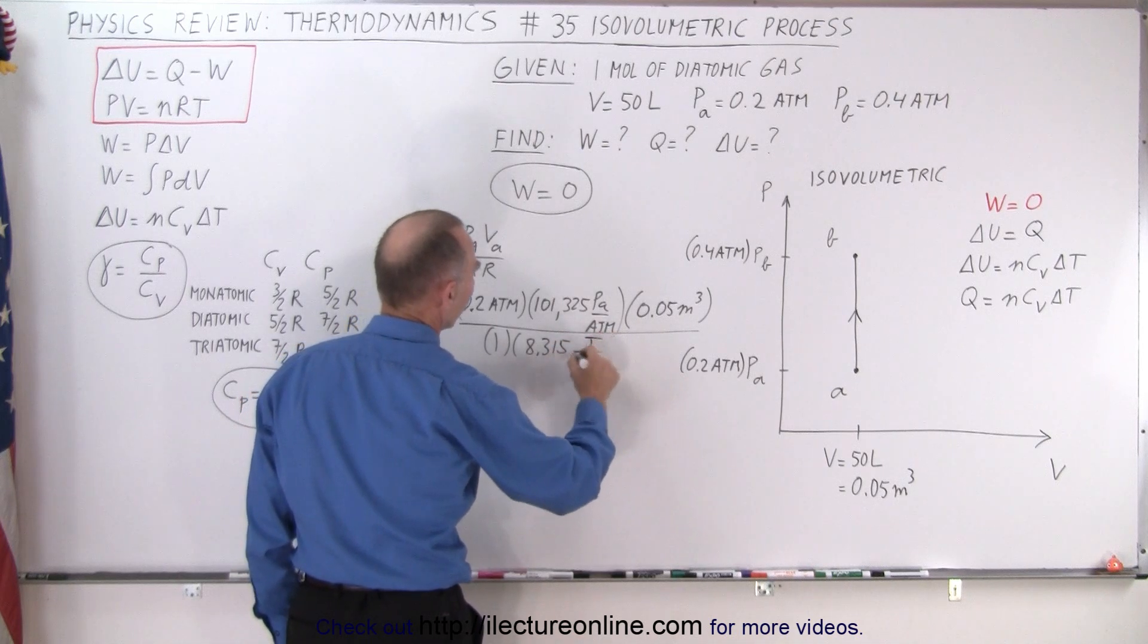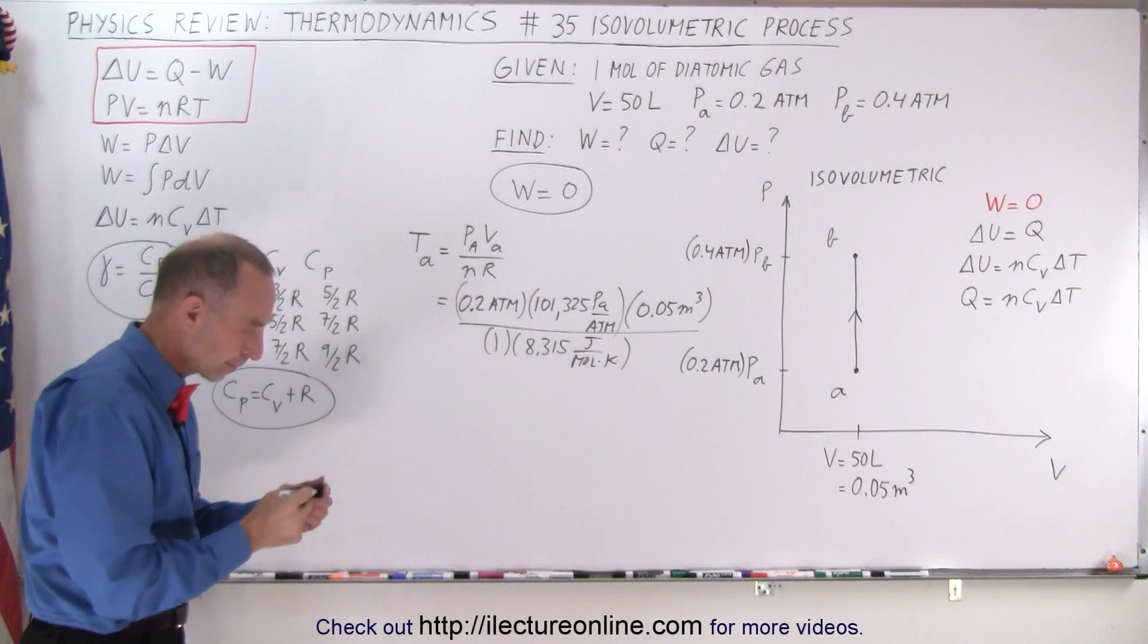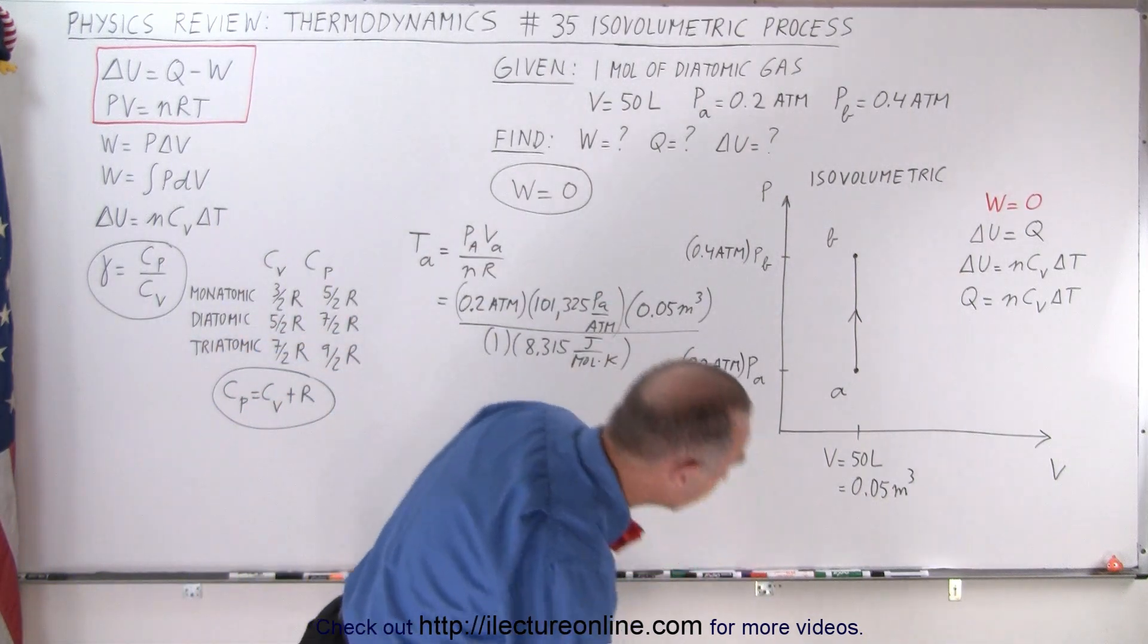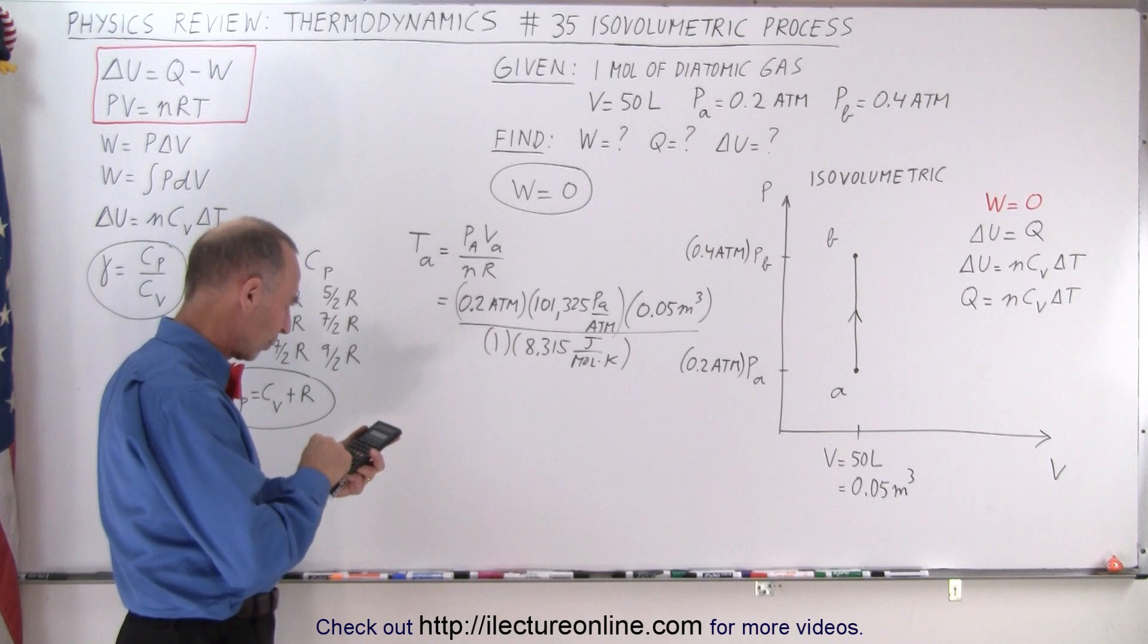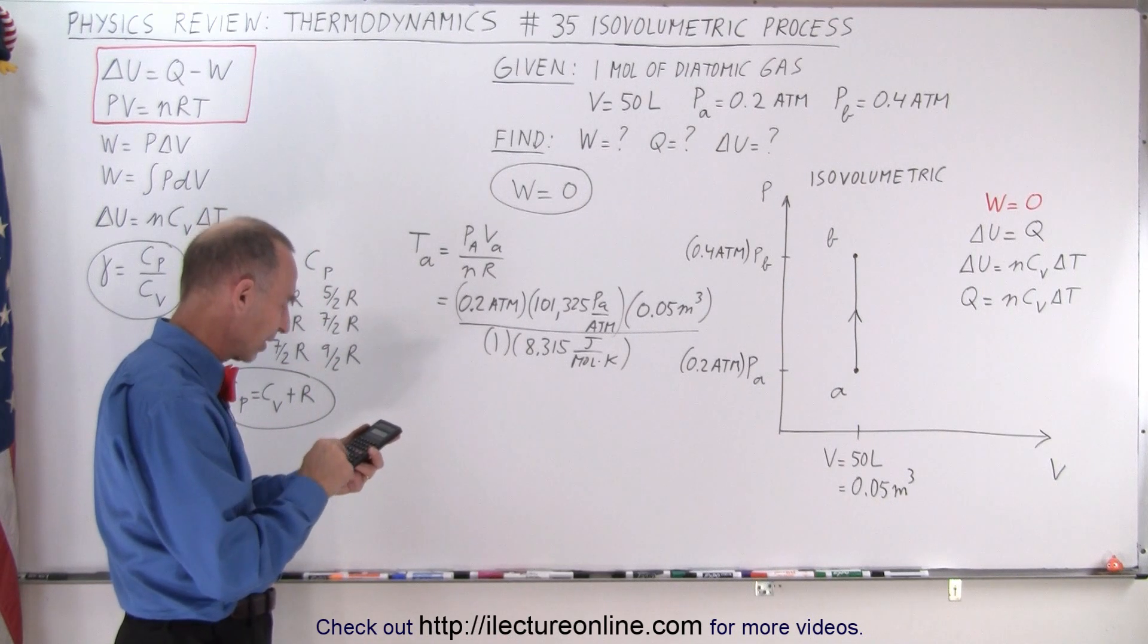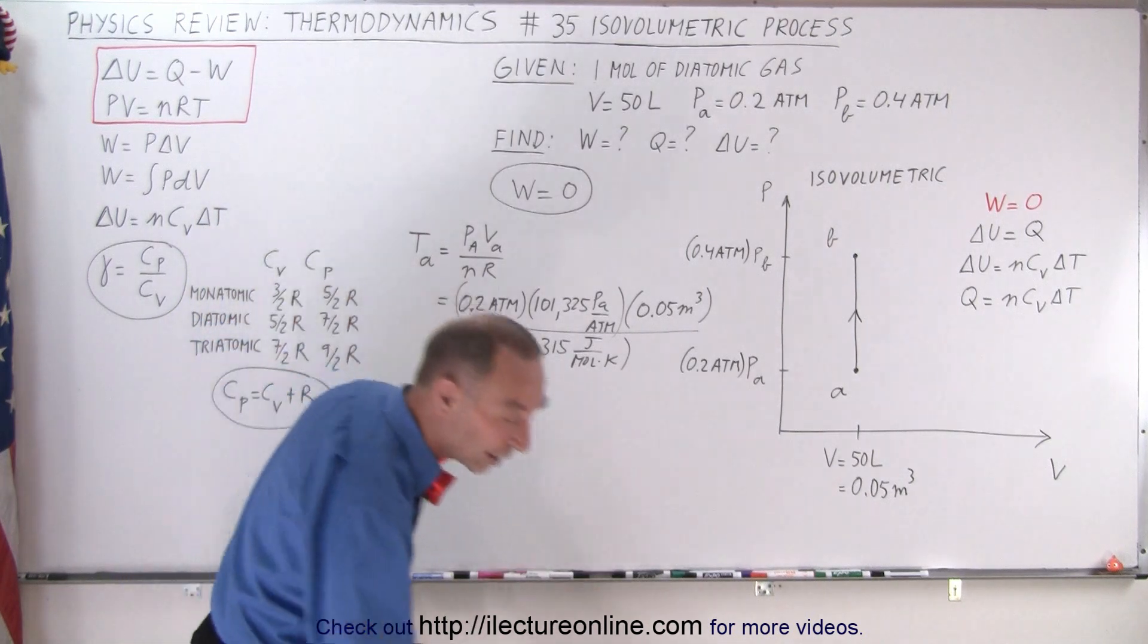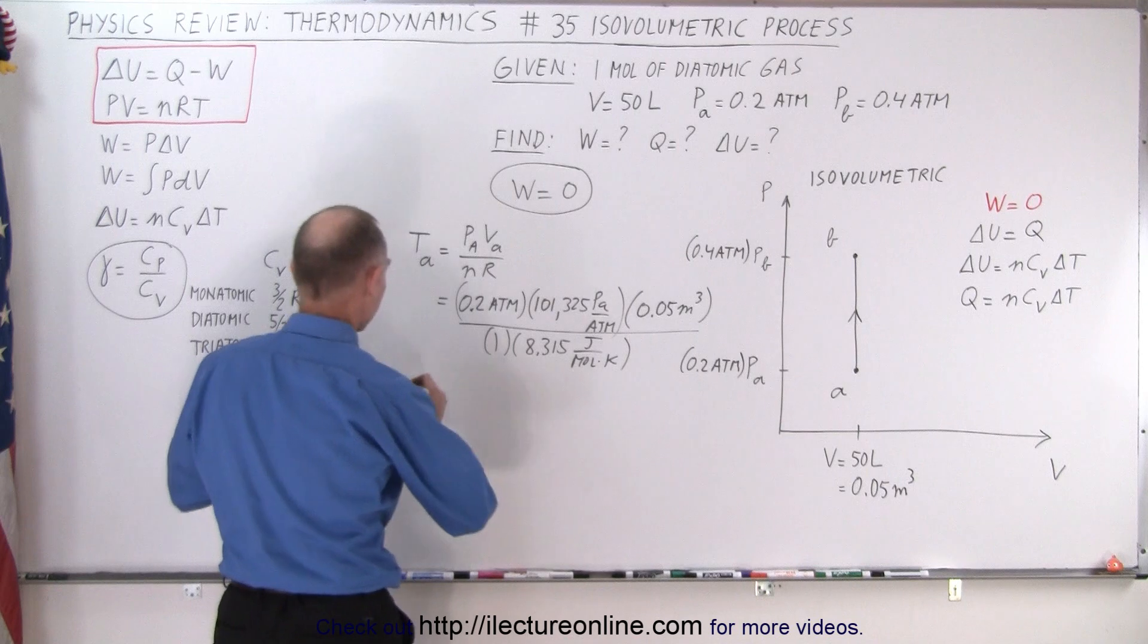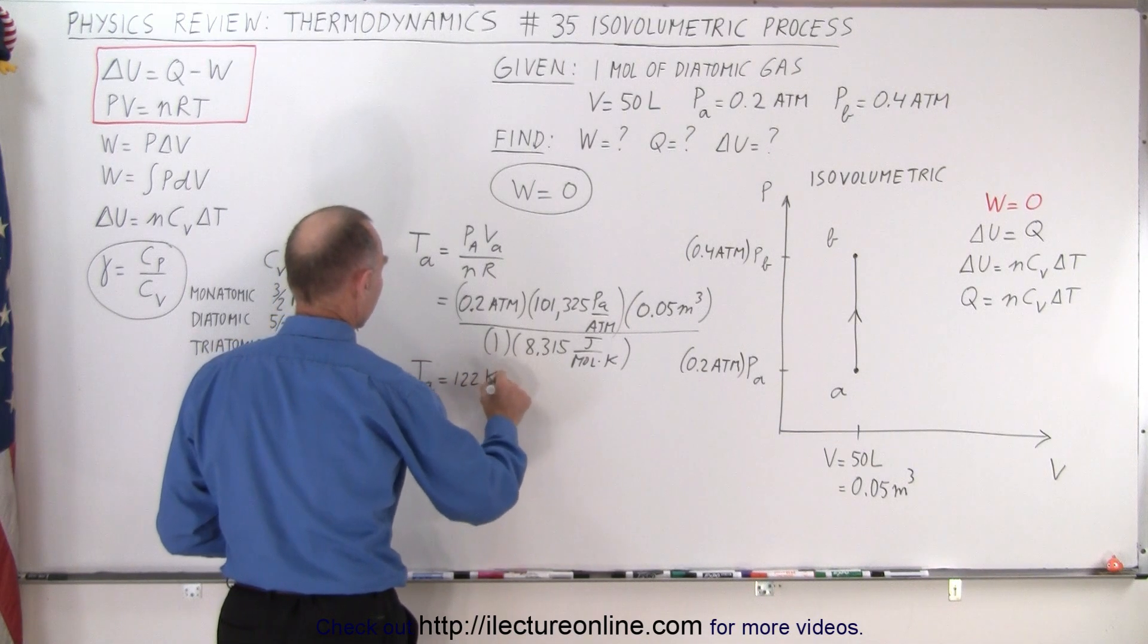Let's see what we get. 0.2 times 101,325 times 0.05 divided by 8.315 and we get 122 Kelvin. So temperature at A equals 122 Kelvin.